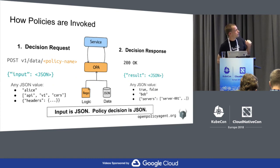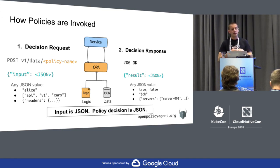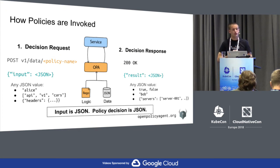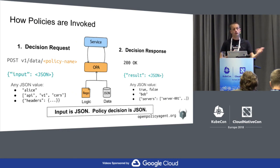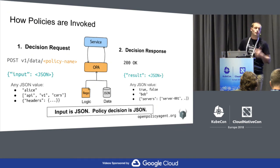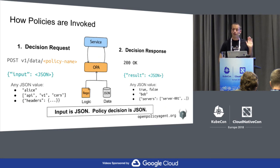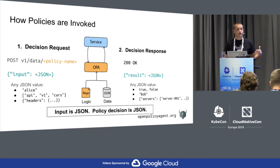Policy decisions are arbitrary JSON, which means they're not simply true-false answers. They can return a hostname (a string), a rate limit (a number), an array — maybe the clusters you'd like to deploy a workload to — or a dictionary, maybe a JSON patch you'd like to apply to a Kubernetes pod before it's released. So OPA is a general purpose policy system: it works for any domain and returns policy decisions that are more than simply Boolean true-false answers.